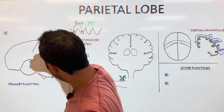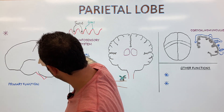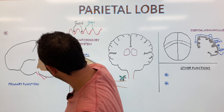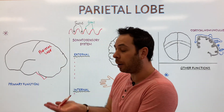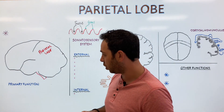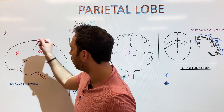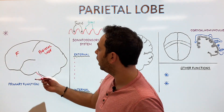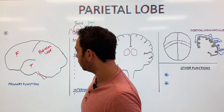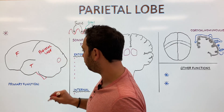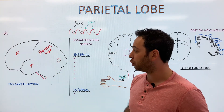So we have our frontal lobe in front of the central sulcus, our temporal lobe just below the lateral sulcus, and our occipital lobe in the back. That's a nice way to think about the divisions and boundaries of the brain.